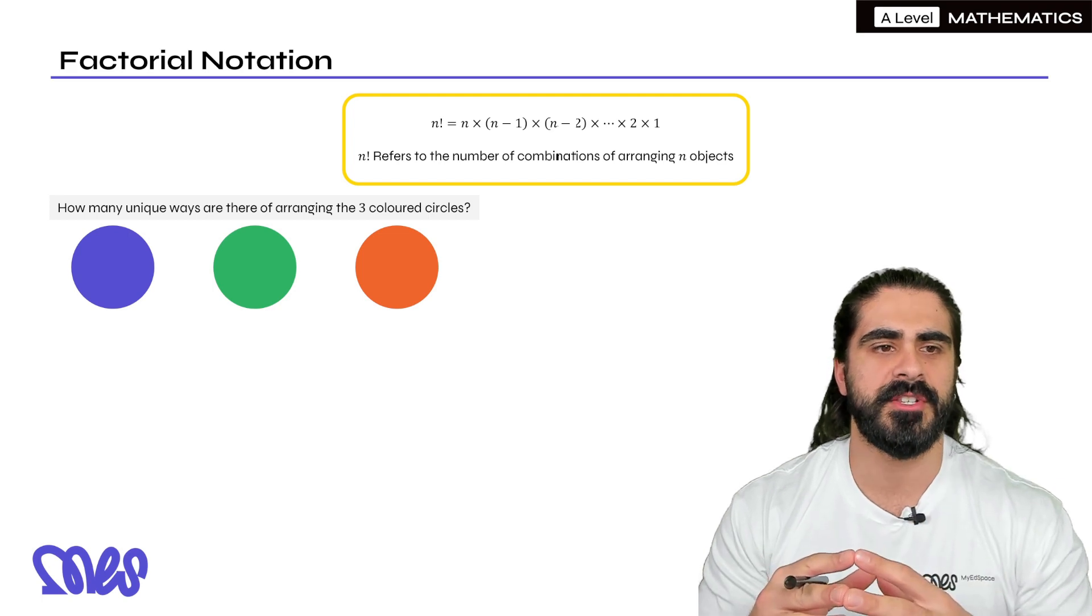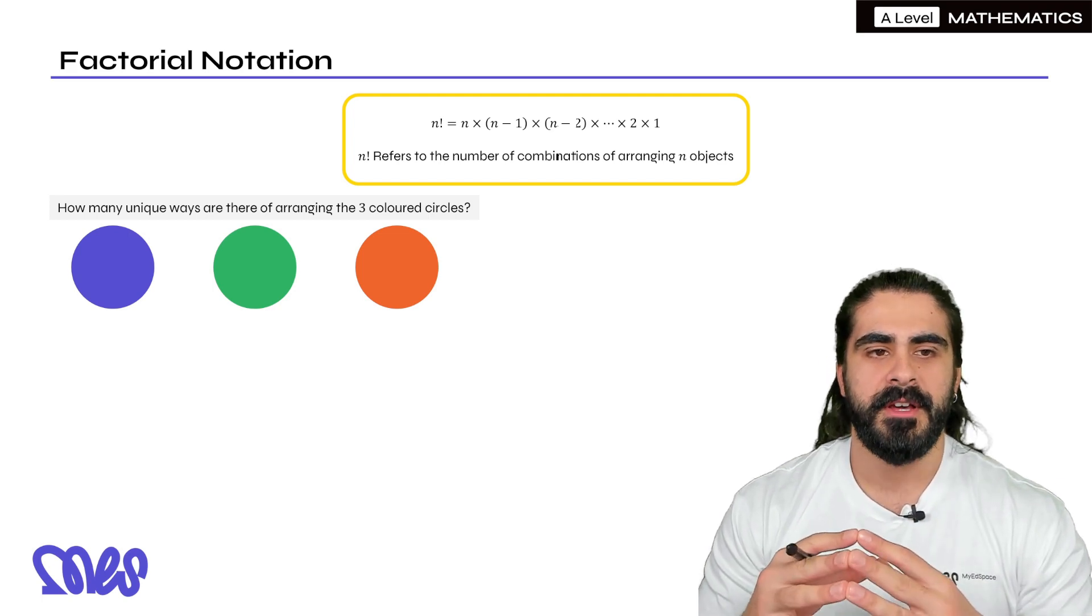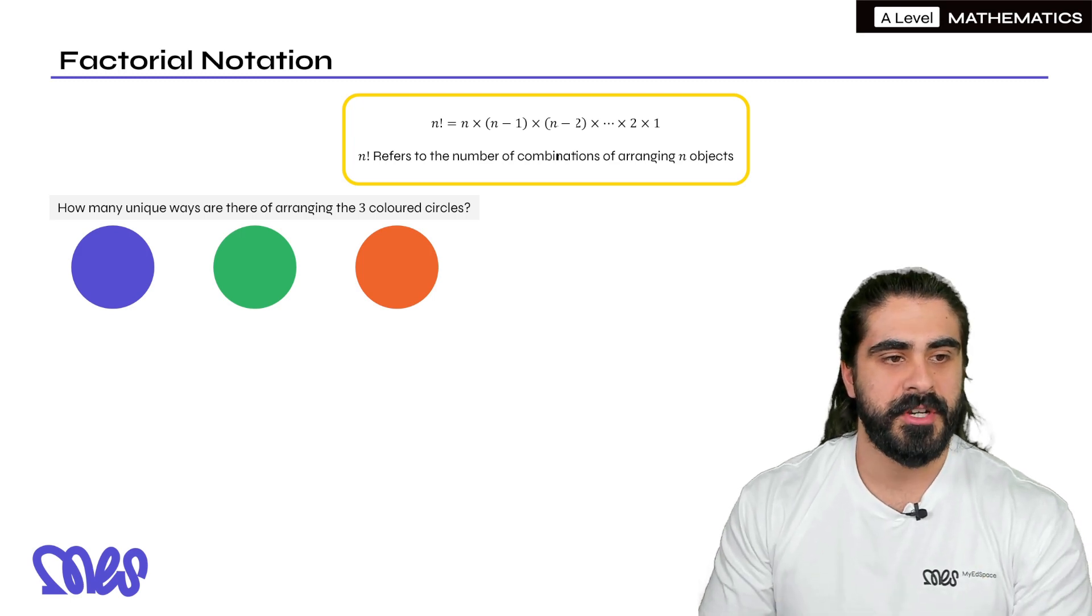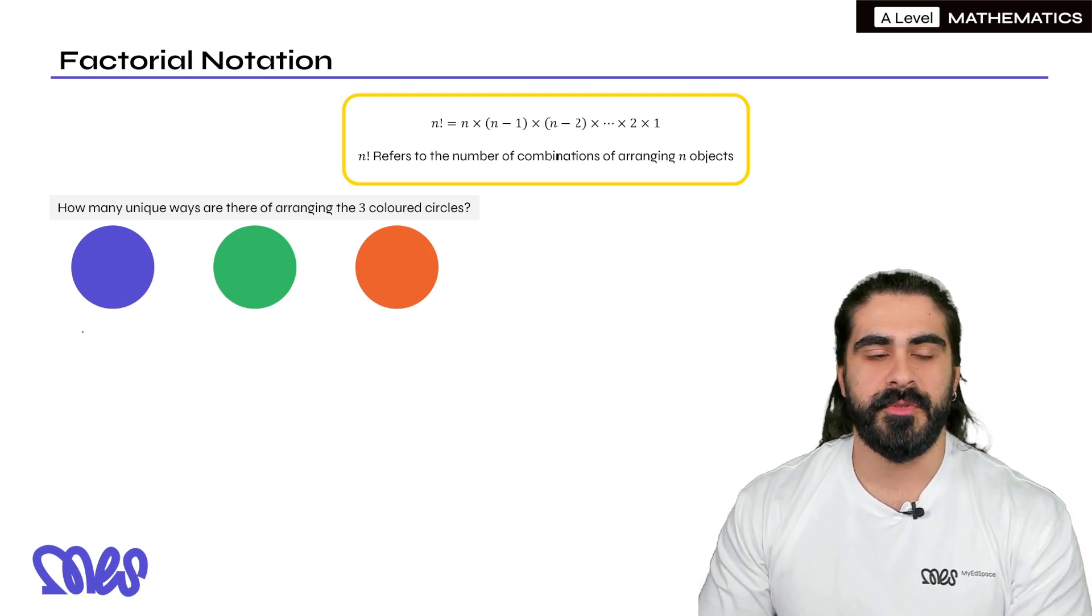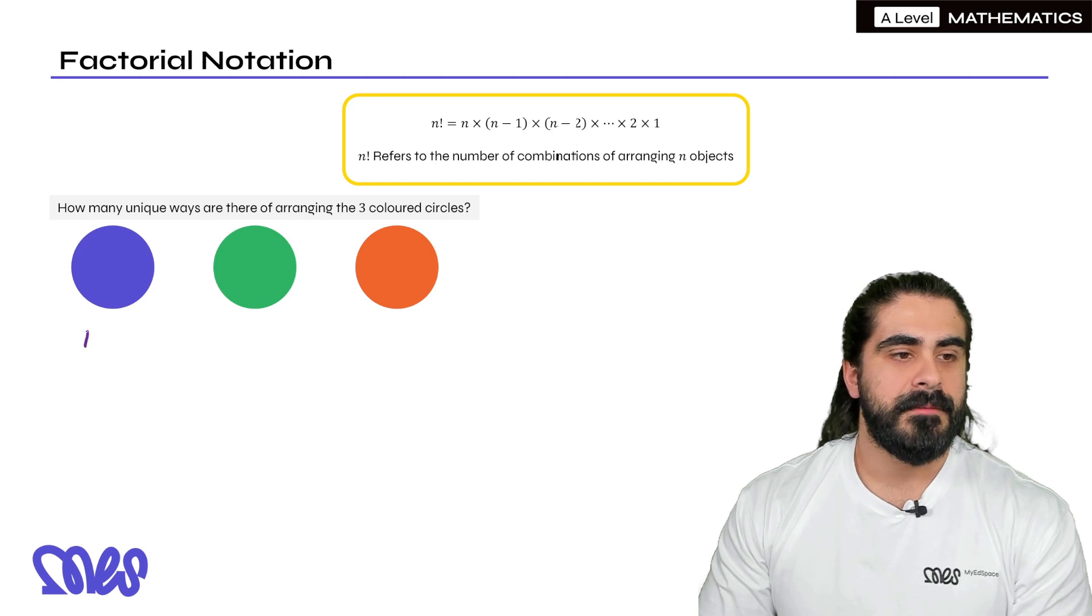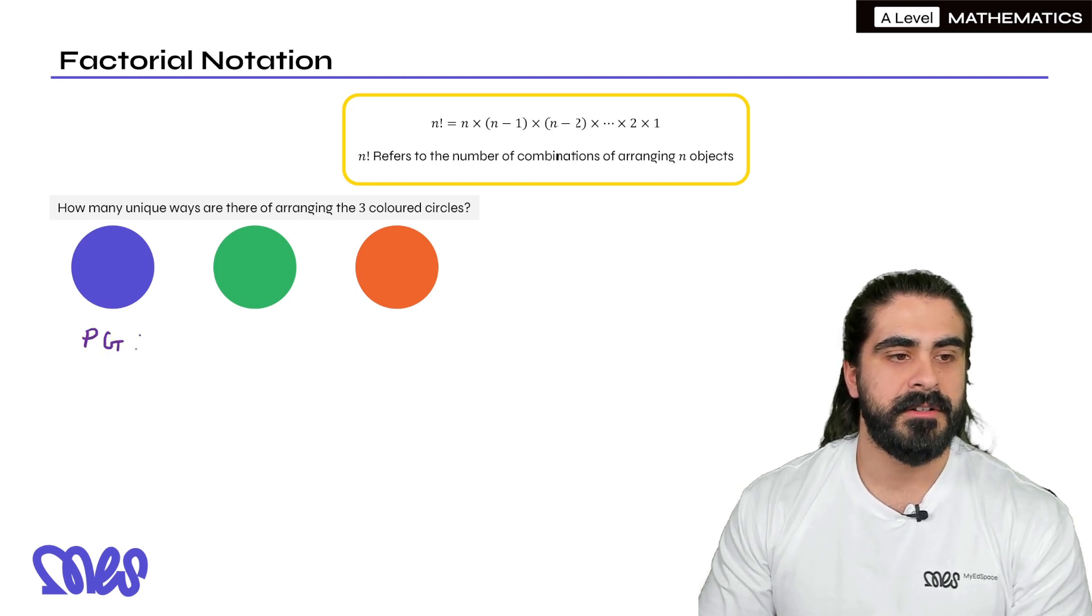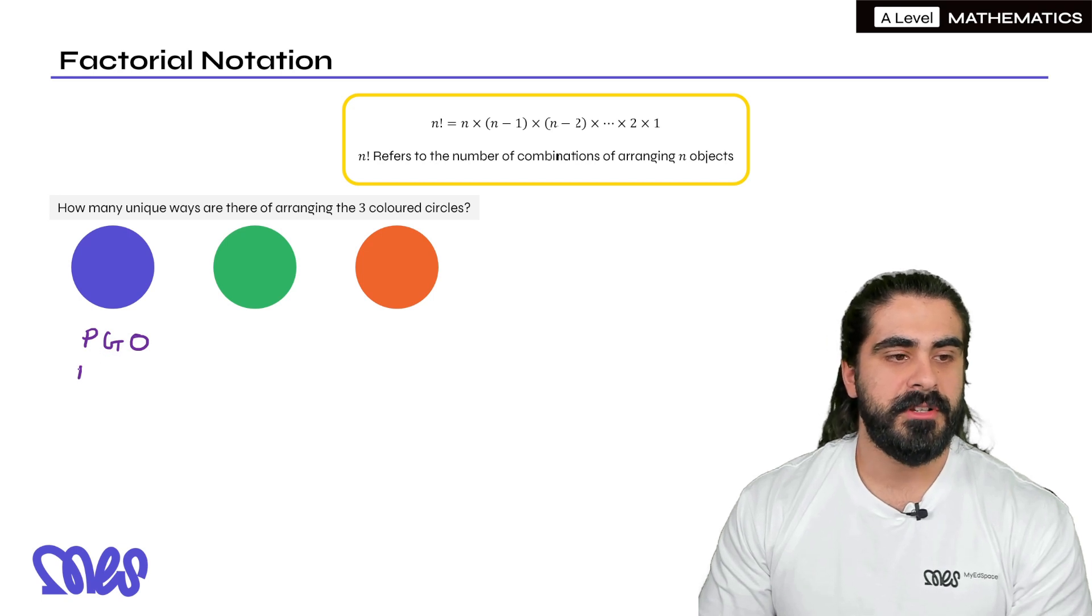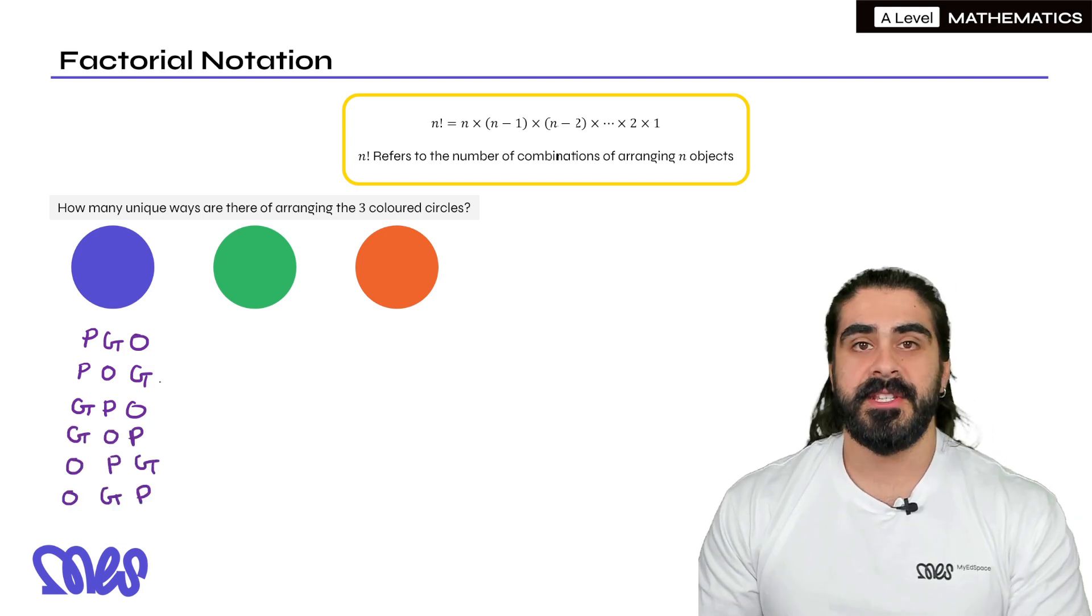So check this example. How many unique ways are there of arranging three coloured circles? So we've got purple, green, and orange. Now if we were to list them, this is what we would do at GCSE. We have purple, green, and orange. Then we can switch the last two, it would be P, O, G. Then we can change the beginning number, we can start with G, P, and then O. Then we can rearrange the last two again, G, O, P.